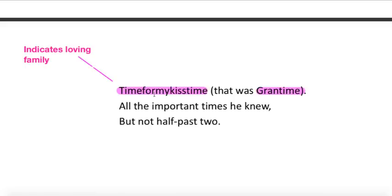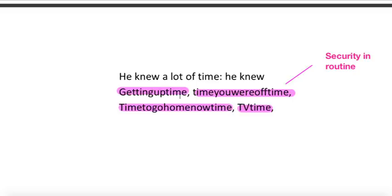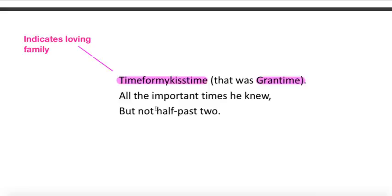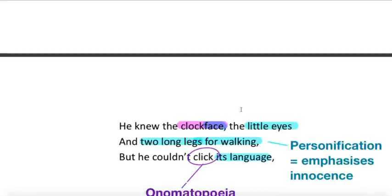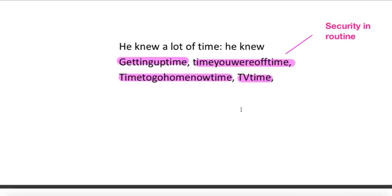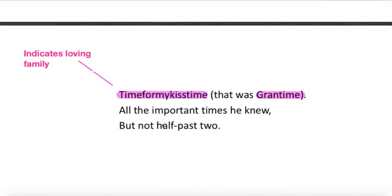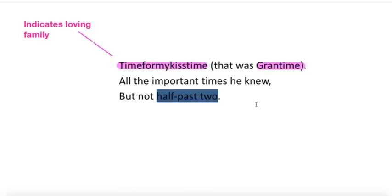We move on as well to a different time, time for my kiss time, that was grand time, all the important times he knew, but not half past two. And so time for my kiss time, I think just helps indicate how loving his family are. He's obviously from comes from a happy home. And this punishment just creates this sense of unease for a boy who has clearly this set routine in his life. And he's been asked to kind of leave that security and enter this into this term of half past two, which he doesn't understand. I could have written here as well, the security of this routine contrasts with the insecurity created by half past two. So you could also comment on contrast here.